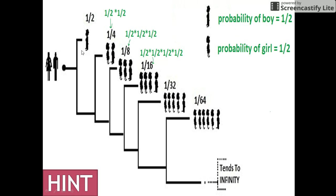Suppose that in the first case a boy is born, so the probability is 1/2. In another case, a girl is born first and then the boy, so the probability is 1/2 × 1/2 = 1/4. In the third case, two girls are born and then a boy, so the probability becomes 1/2 × 1/2 × 1/2 = 1/8. And so on — this process could continue till infinity.